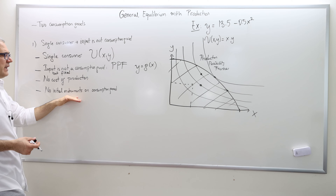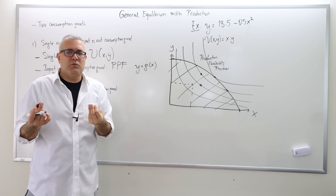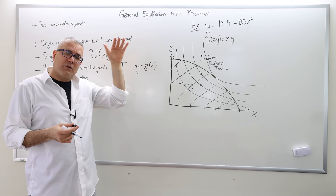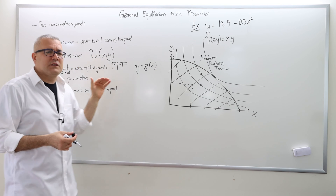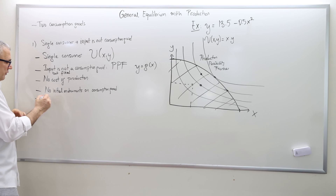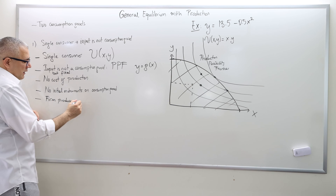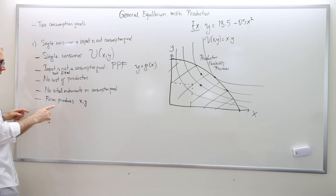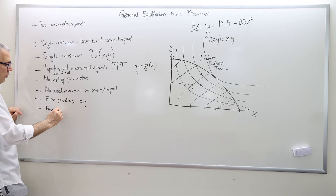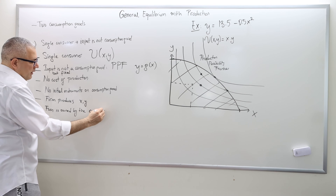There are no initial endowments on the consumption goods. We could assume agents have some initial endowments on good X and good Y, but that would complicate the constraints, so for pedagogical reasons I'll go with this simplest model. The firm produces the consumption goods X and Y by using the input, and the firm is owned by the consumer.